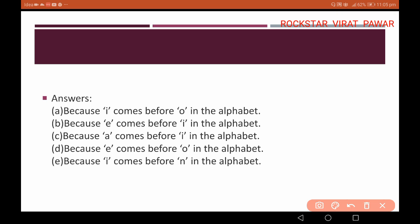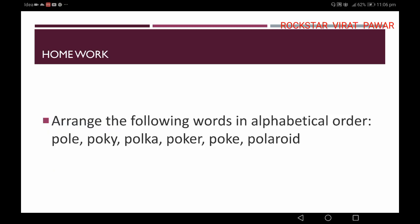So here are the answers. If you have given answers in the comment box, check them against these answers to understand if your answers are correct. For the C option question, if your answer is 'because a comes before i in the alphabet', your answer is right. Now check the D option and E option answers as well.